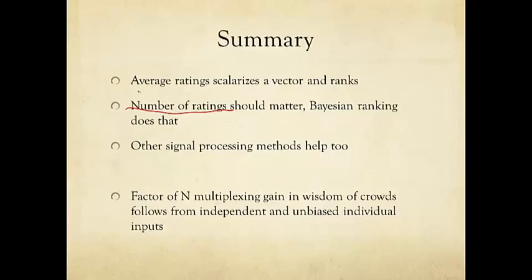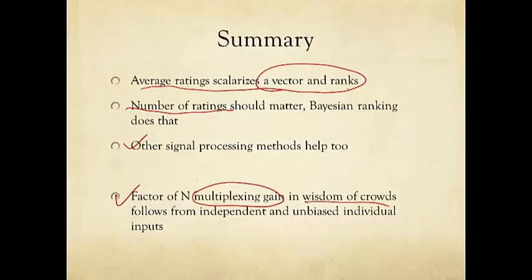And this theme of average rating, scalarizing a vector, and then ranks will carry us, continue us to the next lecture on voting. There's still a lot of things that can be done with signal processing and statistical tools for rating reliability on Amazon and other online venues. One key factor that we brought up is this factor of n. It is one of the two gains, it's called multiplexing gain, in wisdom of crowds.